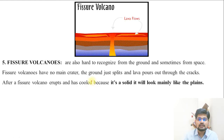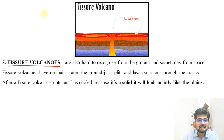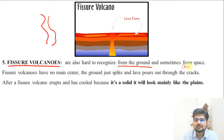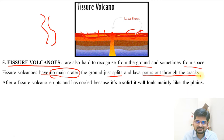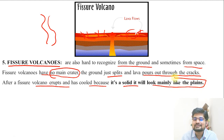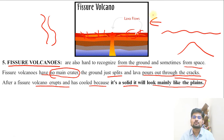The fifth type is the fissure volcano. They are hard to recognize from the ground and sometimes from space. Fissure volcanoes have no main crater — instead the ground splits and lava pours out through multiple cracks. After eruption and cooling, they look mainly like plains, leading to the formation of lava plateaus.